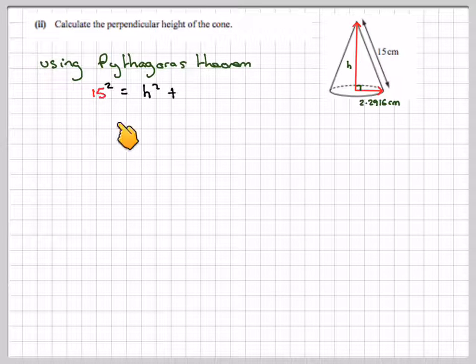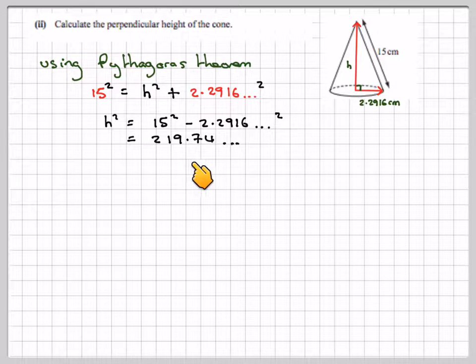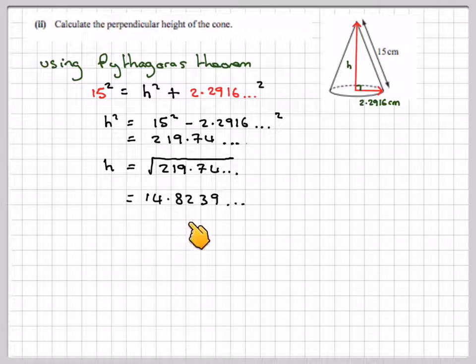We can say that 15 squared equals h squared plus 2.2916 squared. So h squared will be 15 squared minus 2.2916 squared. That gives 219.74. H will equal the square root of that, which equals 14.8239.